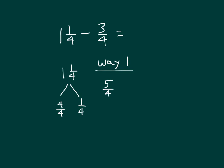And so we've renamed 1 and 1 fourth as 5 fourths, and we subtract 3 fourths from it. 5 fourths minus 3 fourths equals 2 fourths, which when we reduce and simplify it equals 1 half.